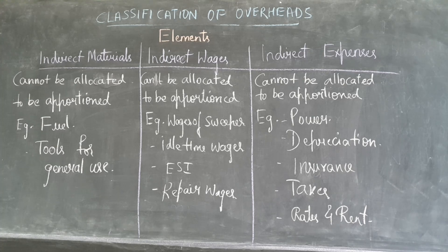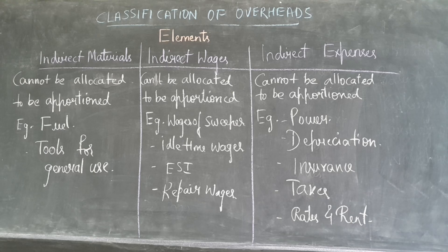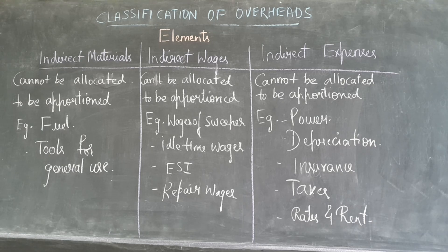When we come to indirect wages, this also cannot be allocated; it needs to be apportioned. For example, wages of a sweeper — the sweeper will sweep all departments, so you cannot put his cost only on one department; it needs to be divided equally. Other examples include idle time wages, employee state insurance (ESI), PF, and repair wages. These all come under indirect wages and cannot be allocated directly.